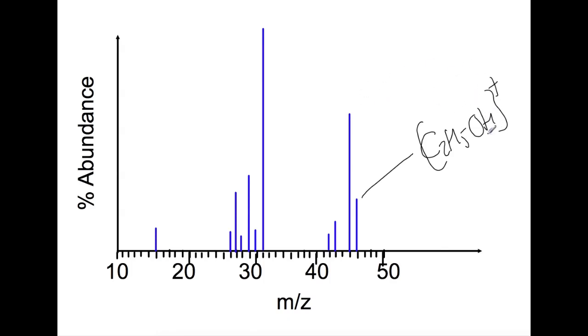We then have our base peak here at 31. One of the ways that we can work out what this fragment is and what has been lost is by looking at the molecular ion and working out what is the difference between the molecular ion and the peak that we're now looking at. So from 46 to 31 we have lost 15. So you then need to look at the structure of your molecule and work out which part would weigh 15. So for this molecule we've lost the CH3 group and the fragment that we're seeing is the CH2OH with a positive charge.